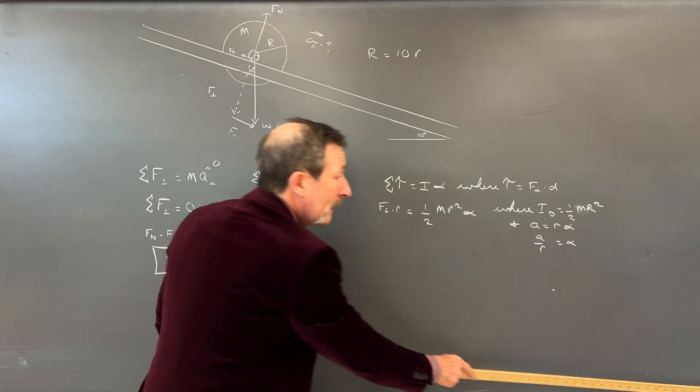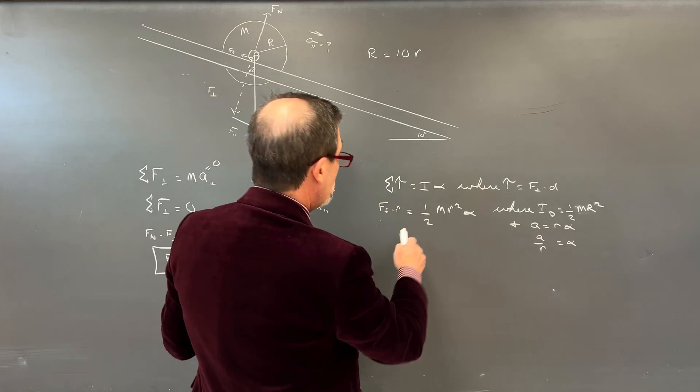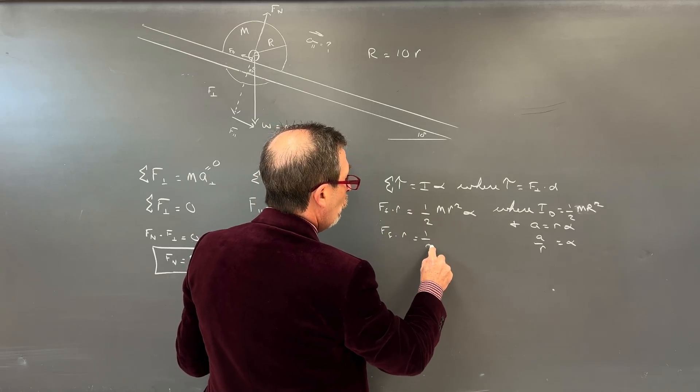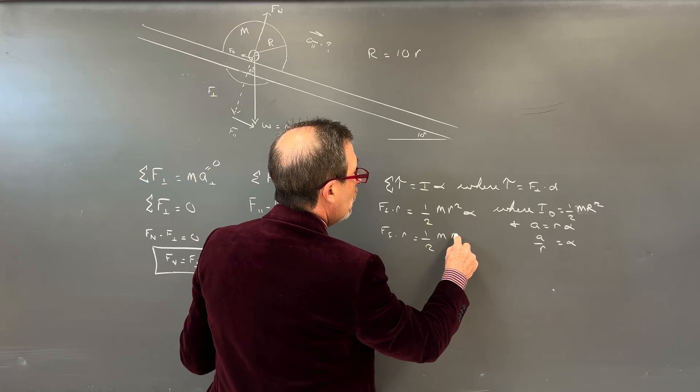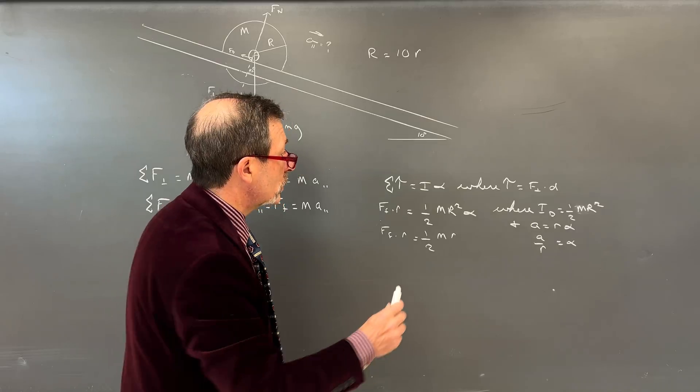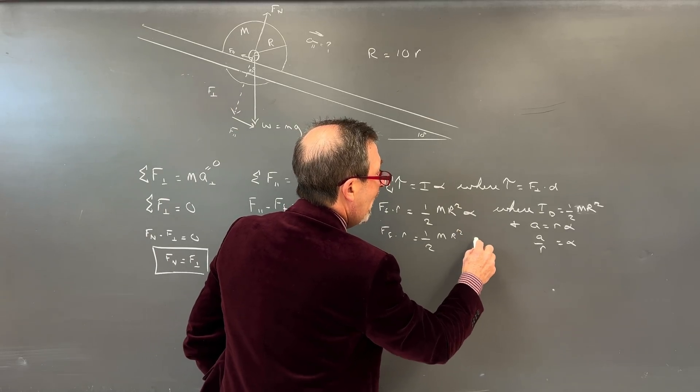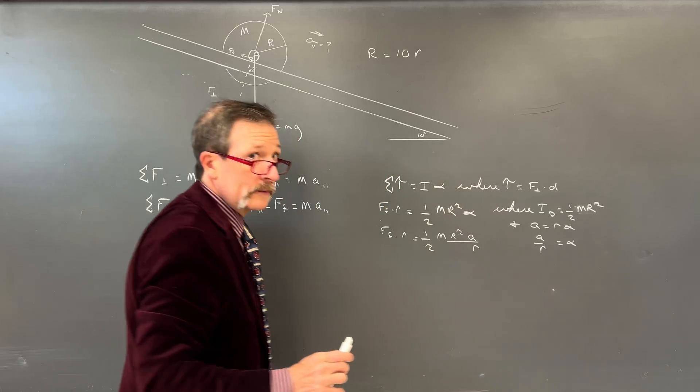And then we're going to end up having alpha. So we can end up saying where our inertia of a disk is equal to 1 half MR squared. Let's keep that a large R, because we're talking about the big disk here. And our alpha, I can put an alpha acceleration is equal to r alpha.